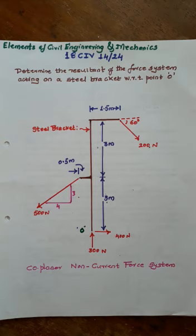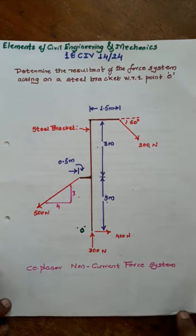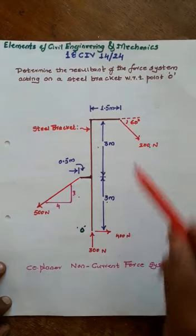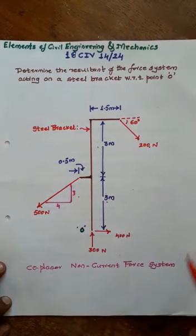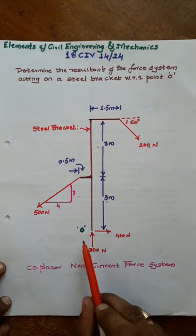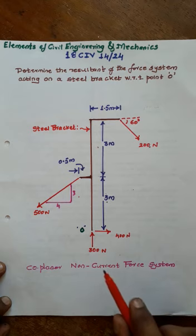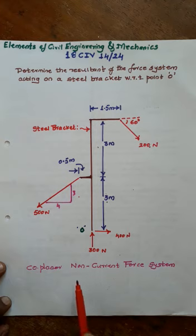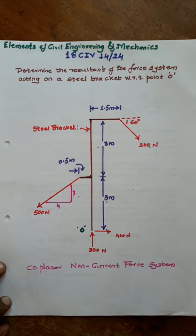With respect to point O, referring from the given figure, the dark brown color indicates the steel bracket. Forces are acting at three points. We have to replace all these forces by means of a single resultant force with respect to O. By seeing the geometry of the figure, this problem comes under the coplanar non-concurrent force system — coplanar means all forces lie in one plane, but their lines of action do not intersect at a common point.